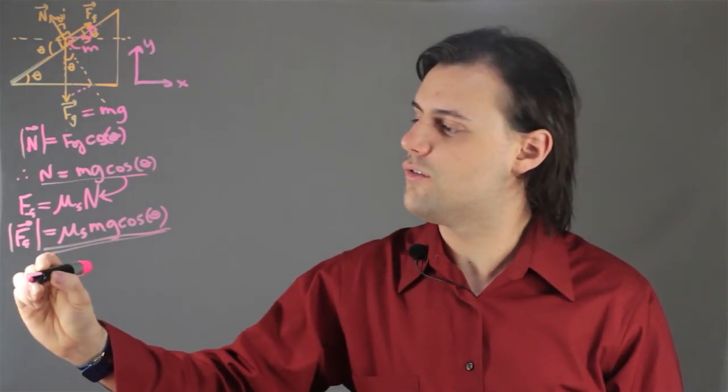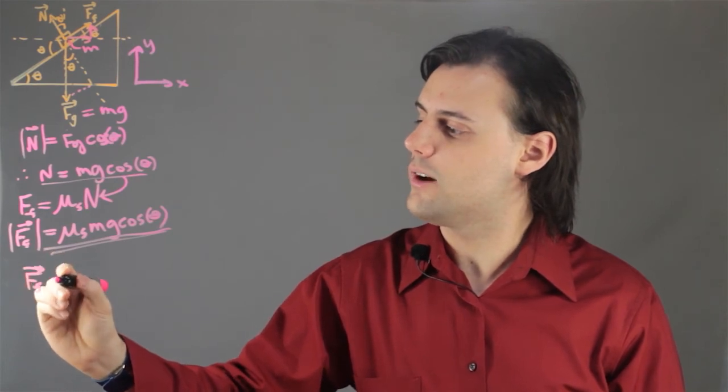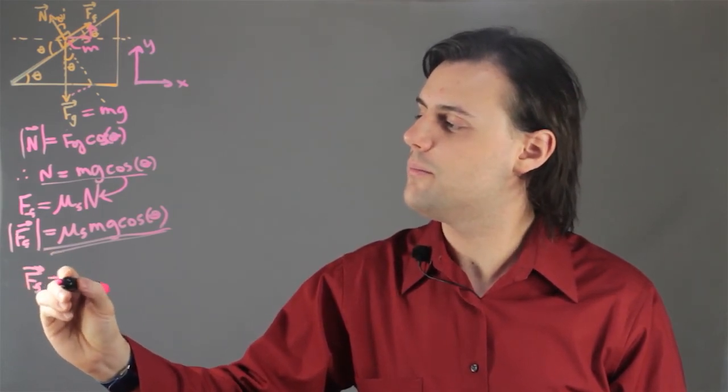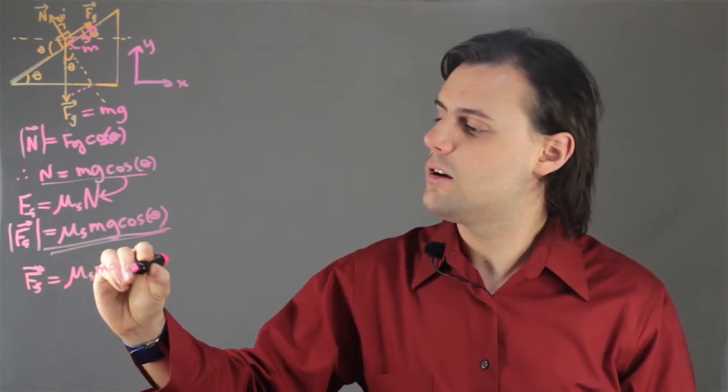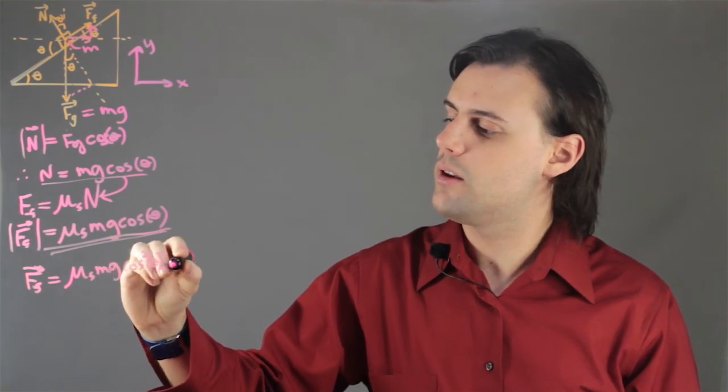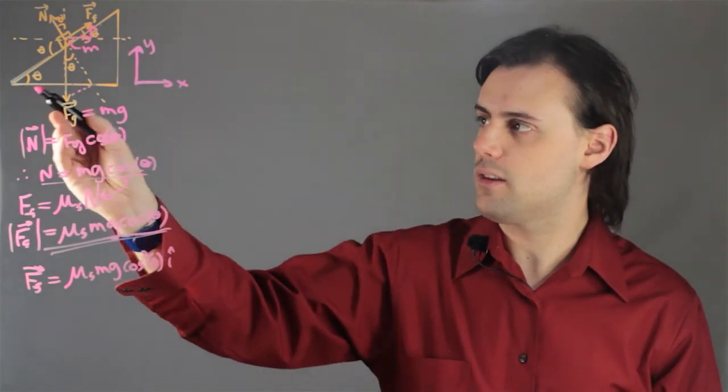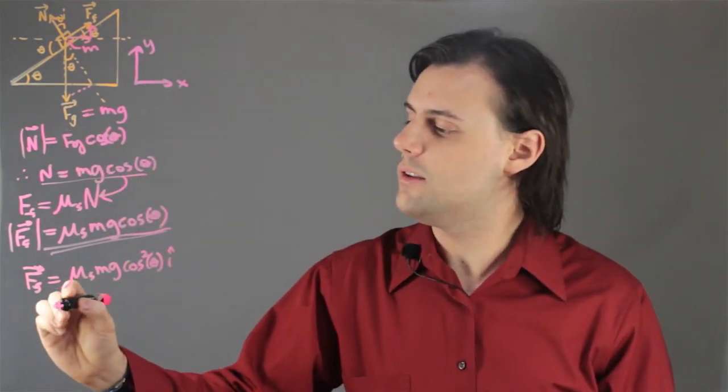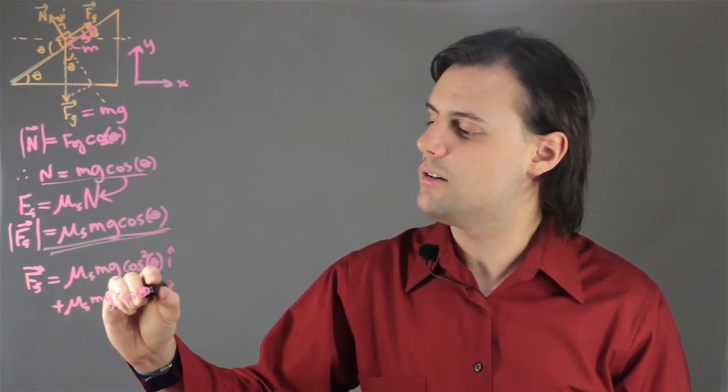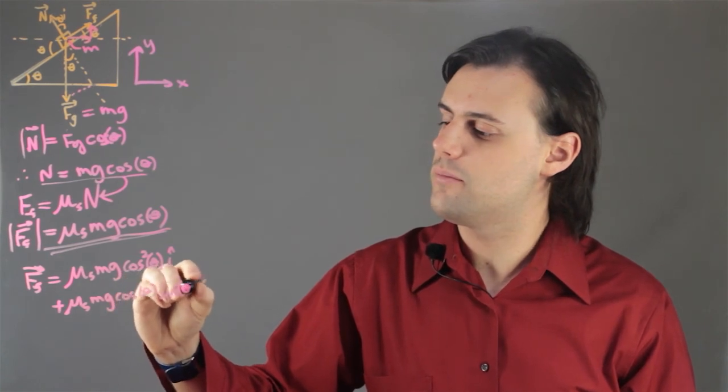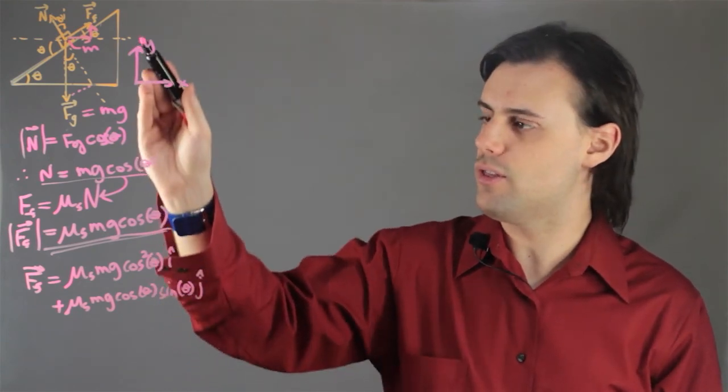Thus, I can write the friction force as a vector with the unit vectors i and j for x and y respectively. And I end up with mu s mg cosine squared theta in the x direction, or in the horizontal direction, that is along the ground, plus mu s mg cosine theta times sine theta times j hat, which is the unit vector associated with the vertical direction.